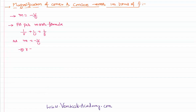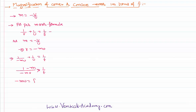I can write v as minus mu. Substituting this in the mirror formula, in the place of v we get: 1 by (minus mu) plus 1 by u equals 1 by f. Taking the LCM, this gives 1 minus m over (minus mu) equal to 1 by f.